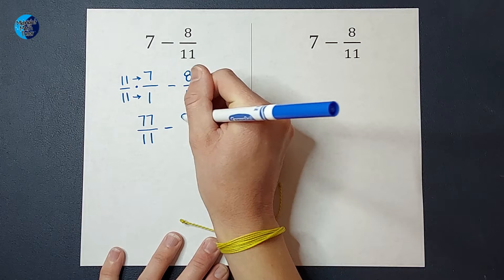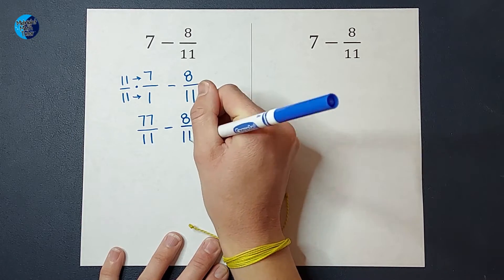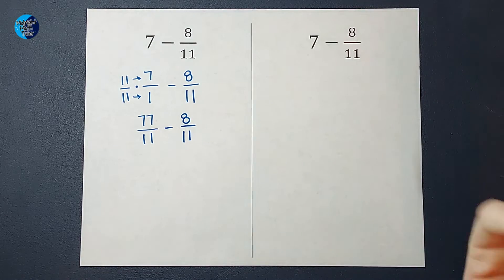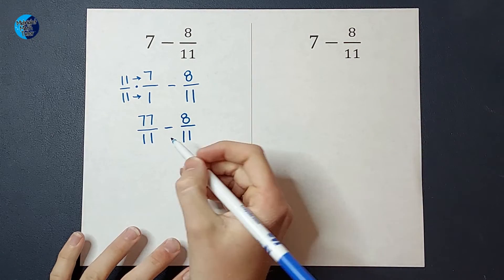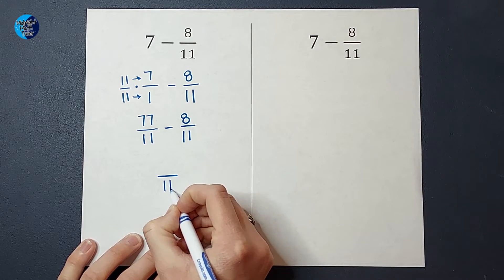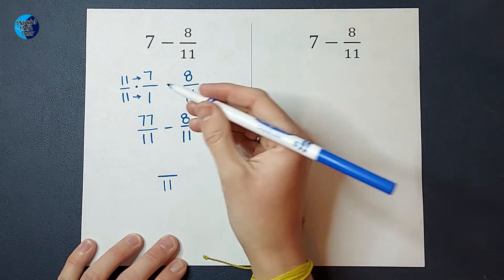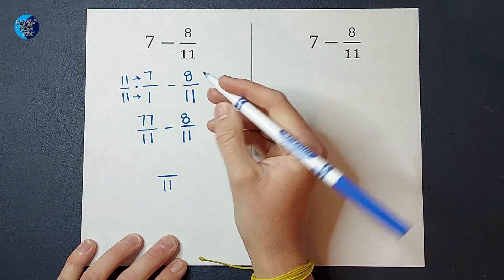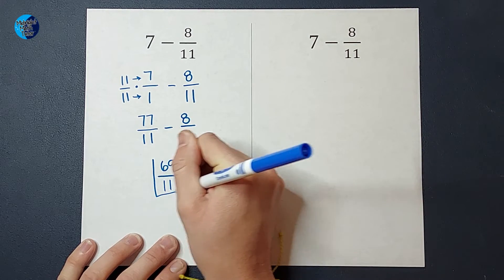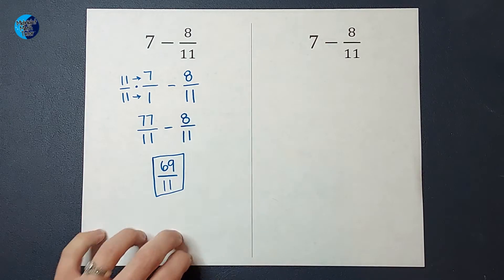And we are subtracting the eight elevenths. So you'll notice if I were to take 77 divided by 11, I get seven. So it's the same number, just written differently. Then when I subtract these, my denominator will stay 11. That's why they needed to be the same. And then 77 minus eight will give me 69. That's my answer as an improper fraction.